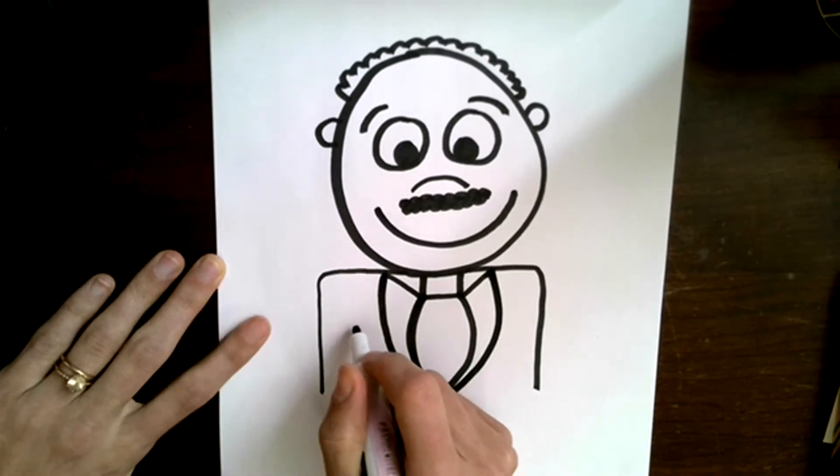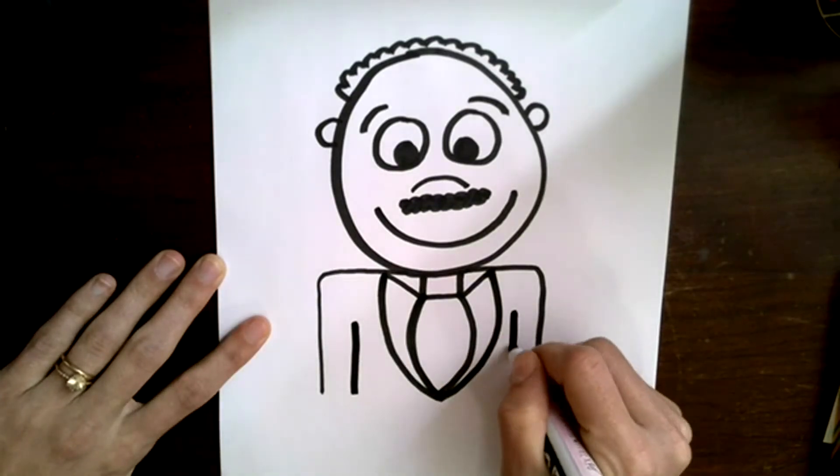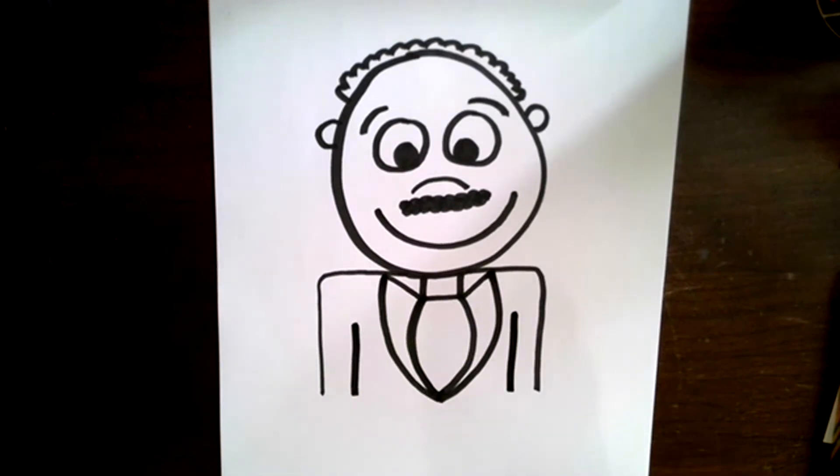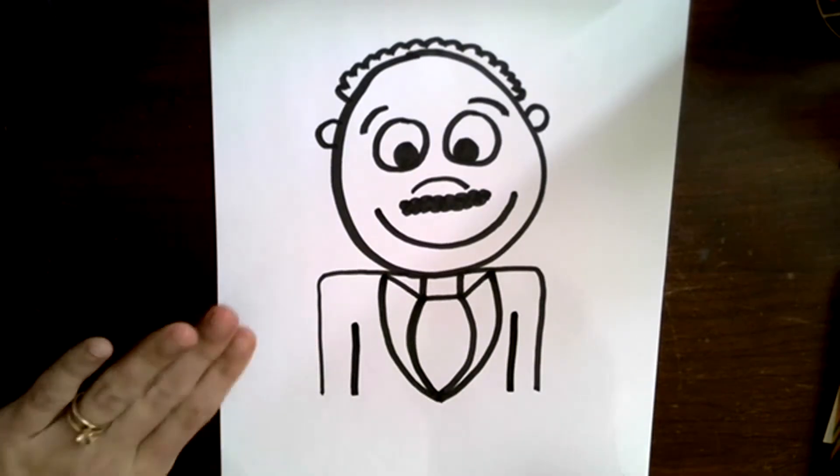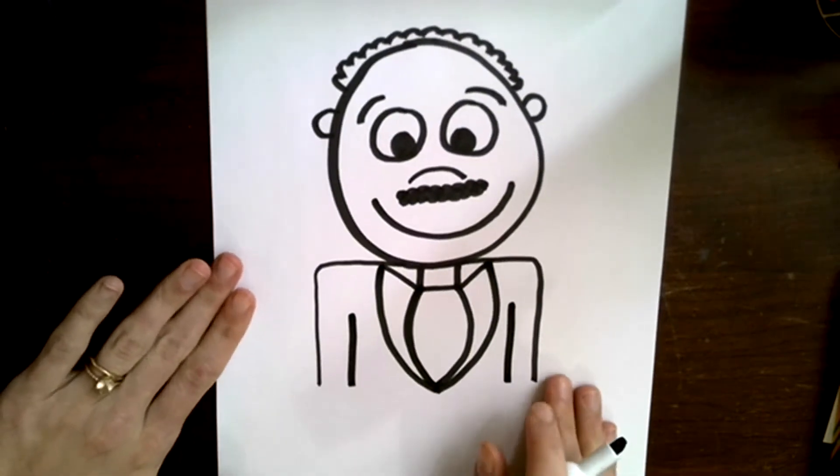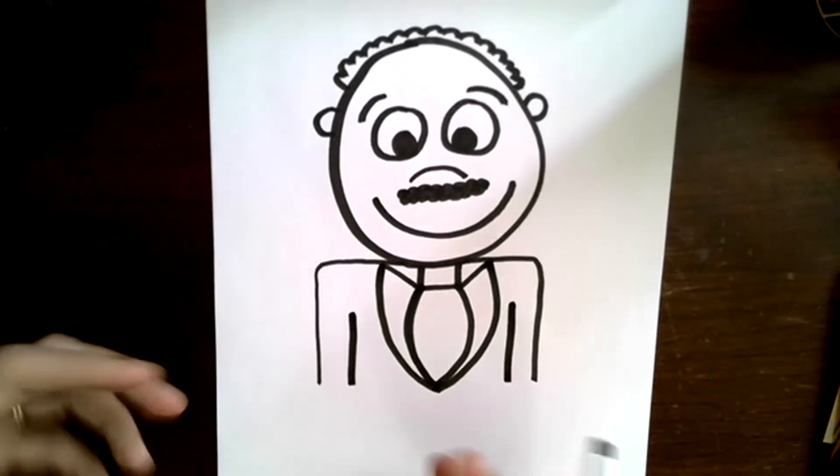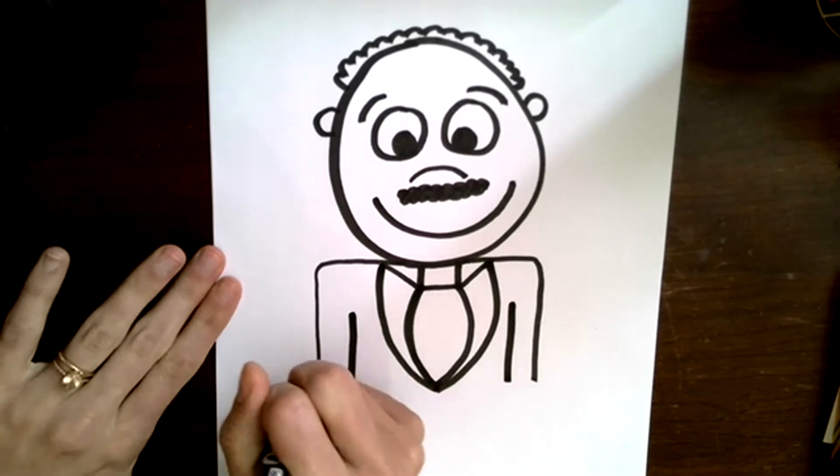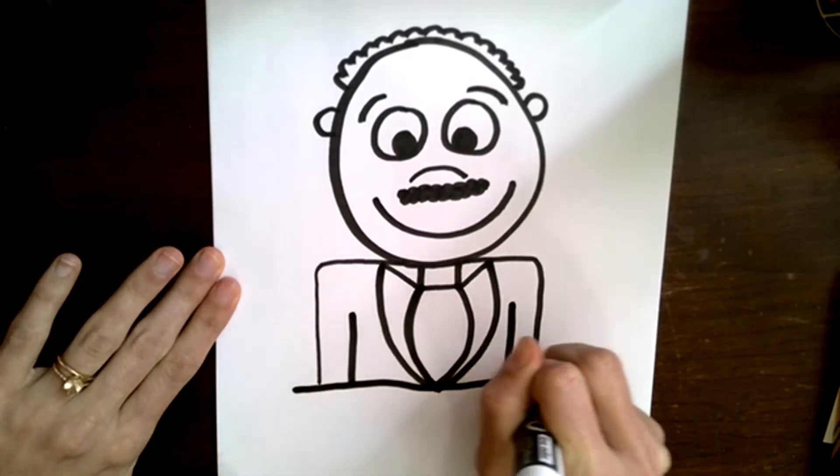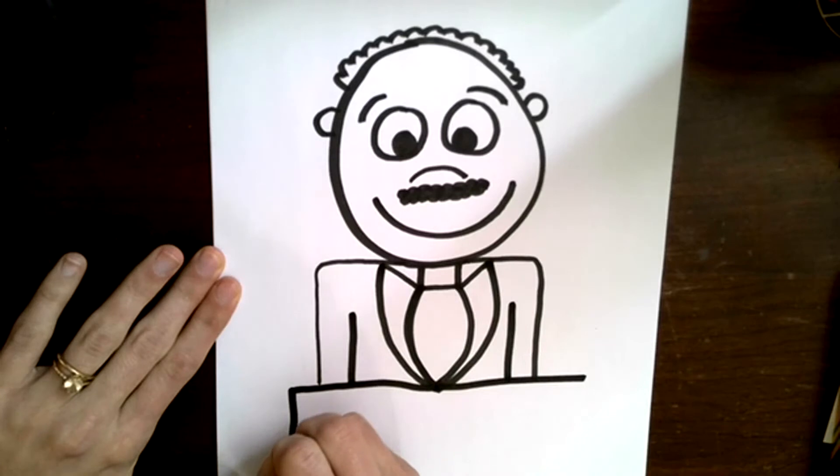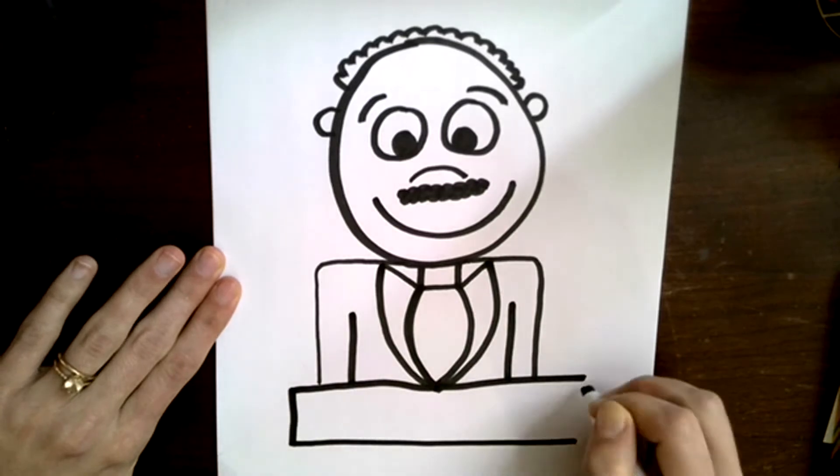Now give him some arms by just drawing two straight lines like this. Dr. King was a great speaker, so we're going to put him in front of a podium, which is a place that people do a lot of speaking. So you're going to just draw from the bottom of your picture here a rectangle just like this.